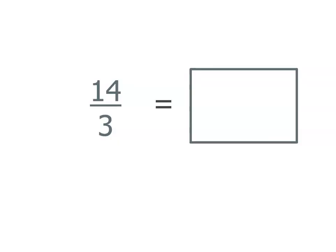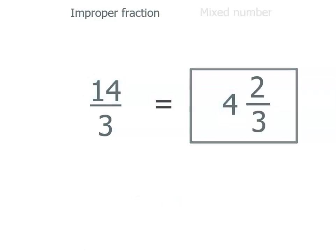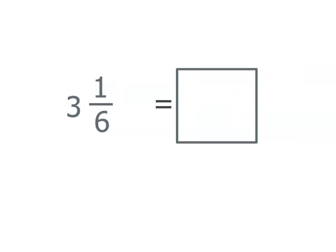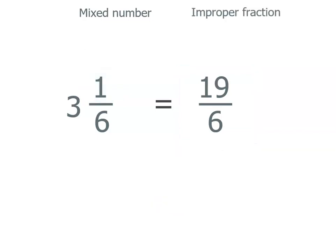Let's try a few more. 14 thirds is an improper fraction. 14 divided by 3 gives us 4, and there are still some thirds left — we've allocated 4, which is 12 thirds, and there are 2 left. So 4 and 2 thirds is the mixed number for 14 thirds. This time we've got 3 and 1 sixth — a mixed number — and we're going to end up with an improper fraction with 6 as our denominator. We've got 3 multiplied by 6, which is 18, plus one more, so altogether we've got 19 sixths. There's the improper fraction for 3 and 1 sixth.